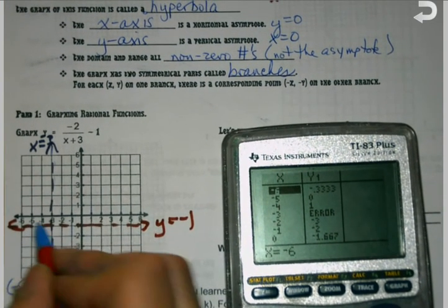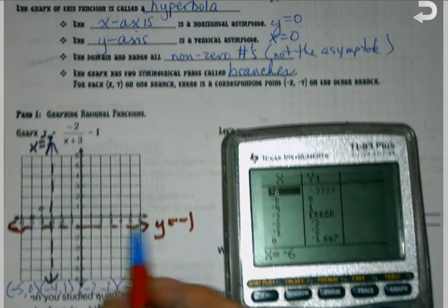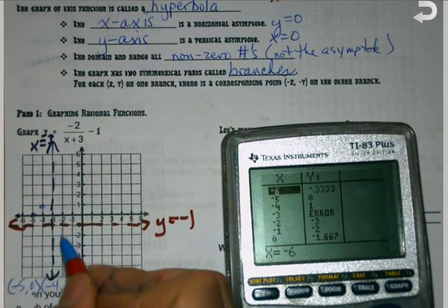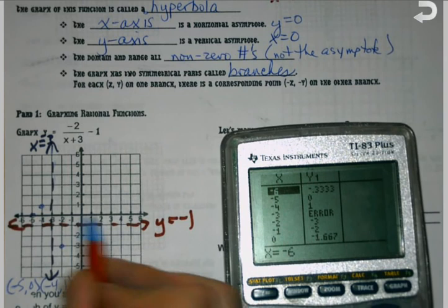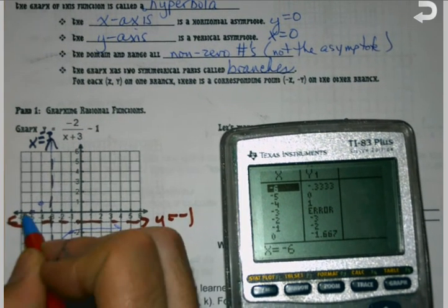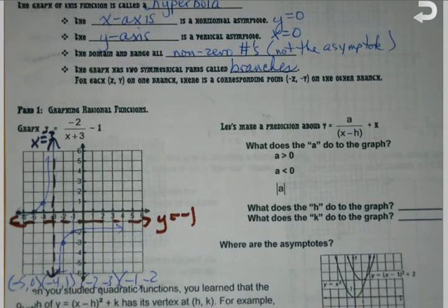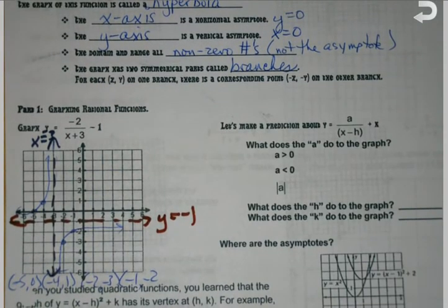So when I go ahead and I plot those points, that's going to give me enough of an idea of where my branches are starting that I could actually go ahead and graph my curve or my branch going for each direction. So now that I've got that drawn, let's see here. What does this actually do to the graph?